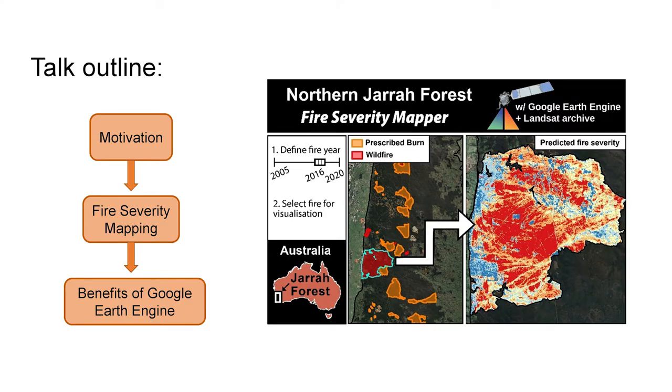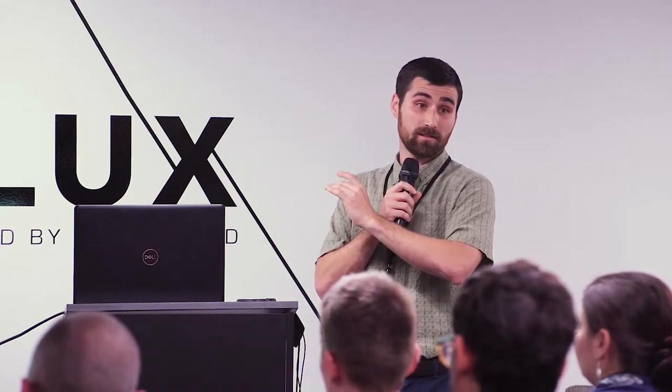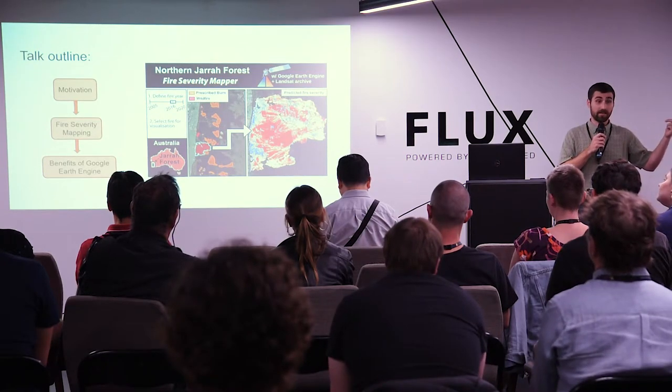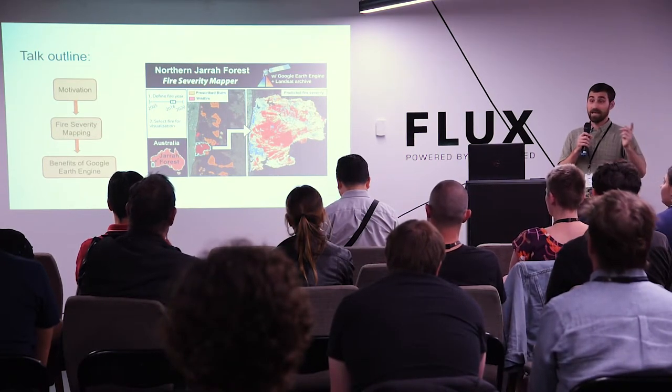What we've got is the Northern Jarrah Forest fire severity mapper — we don't have a great acronym yet for this model, so if you've got one, let us know. For each wildfire and prescribed burn in the last 16 years, those are DBCA fire polygons in the DBCA 060 dataset. Thanks to DBCA for putting those data together as open source. I've taken those data and created a fire severity map with Landsat for each of those fires.